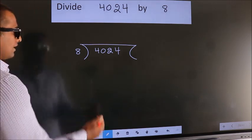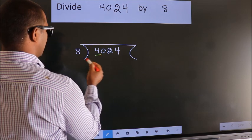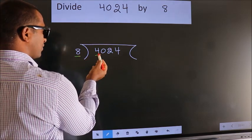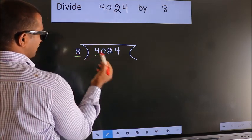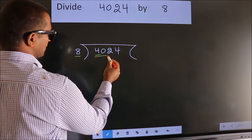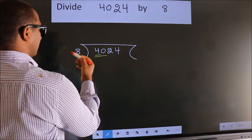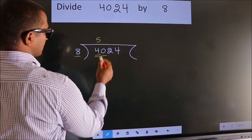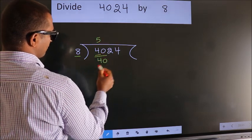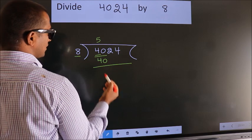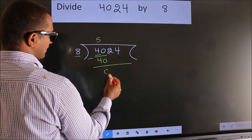Next. Here we have 4, here 8. 4 smaller than 8. So we should take 2 numbers, 40. When do we get 40? In 8 table. 8 fives, 40. Now we should subtract. We get 0.